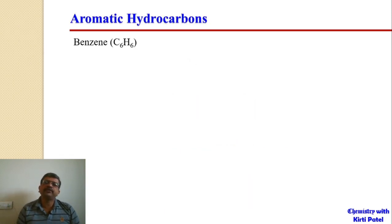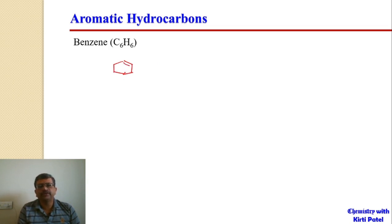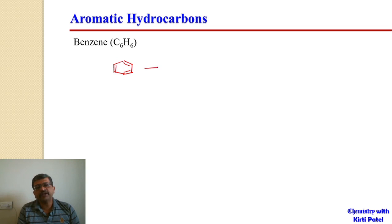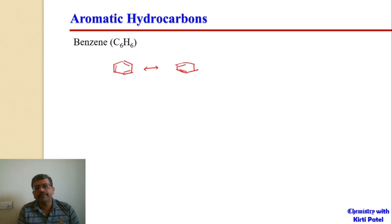The simplest aromatic compound is benzene, which consists of six carbon atoms where alternate carbon atoms possess a double bond — so we have three double bonds and three single bonds. This can be represented in another structure where the double bonds shift to alternate positions. These two structures we call resonance structures.